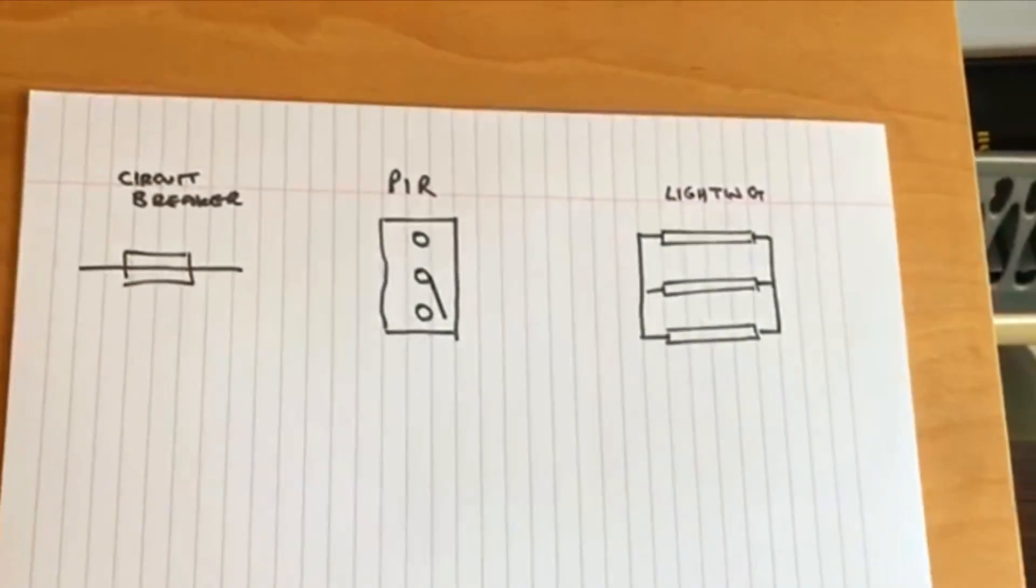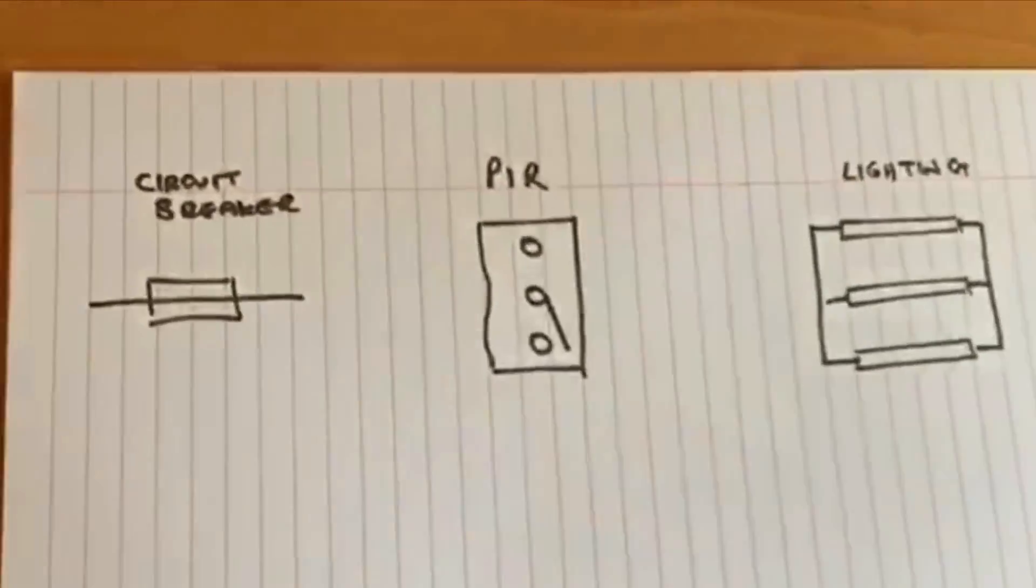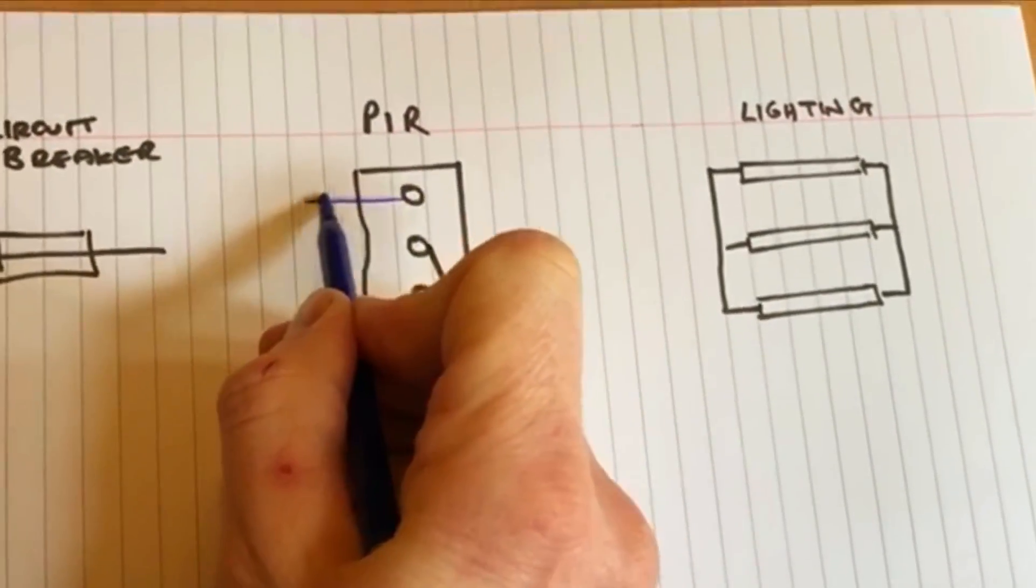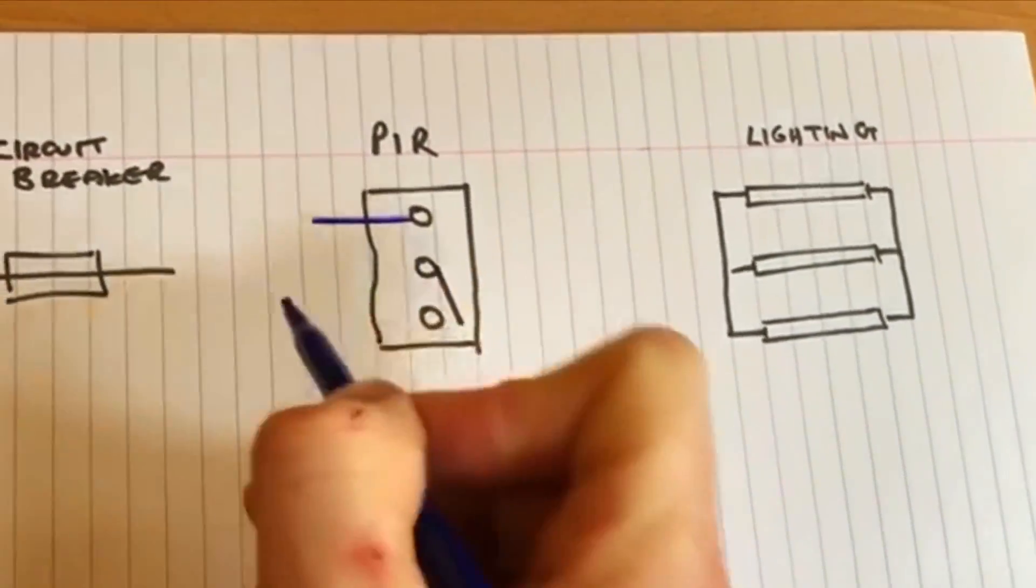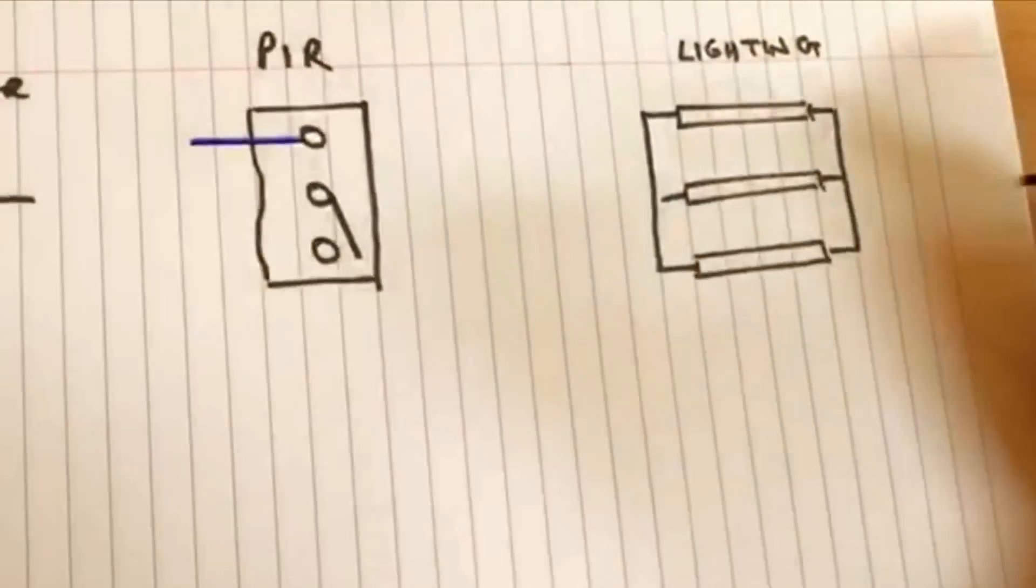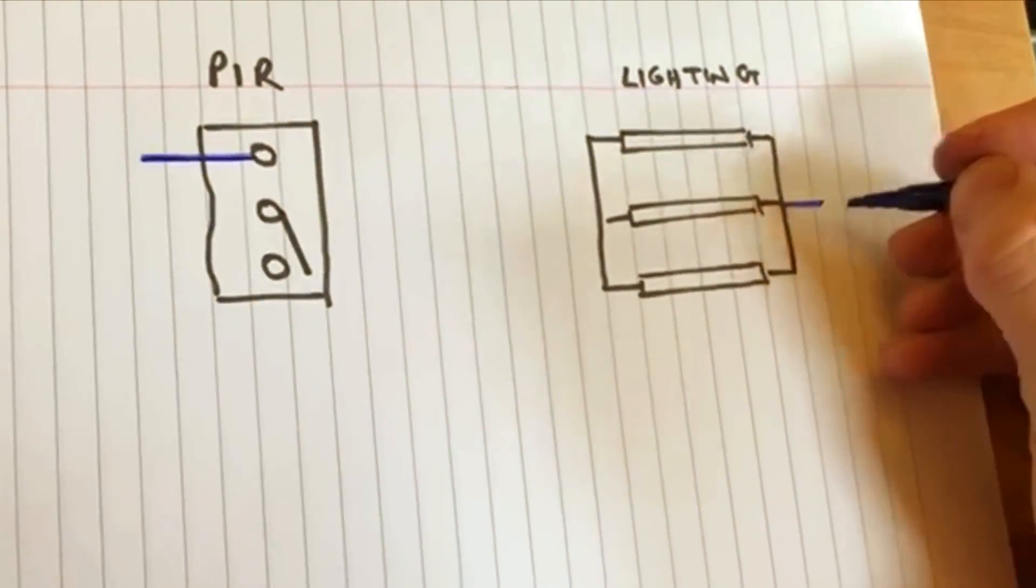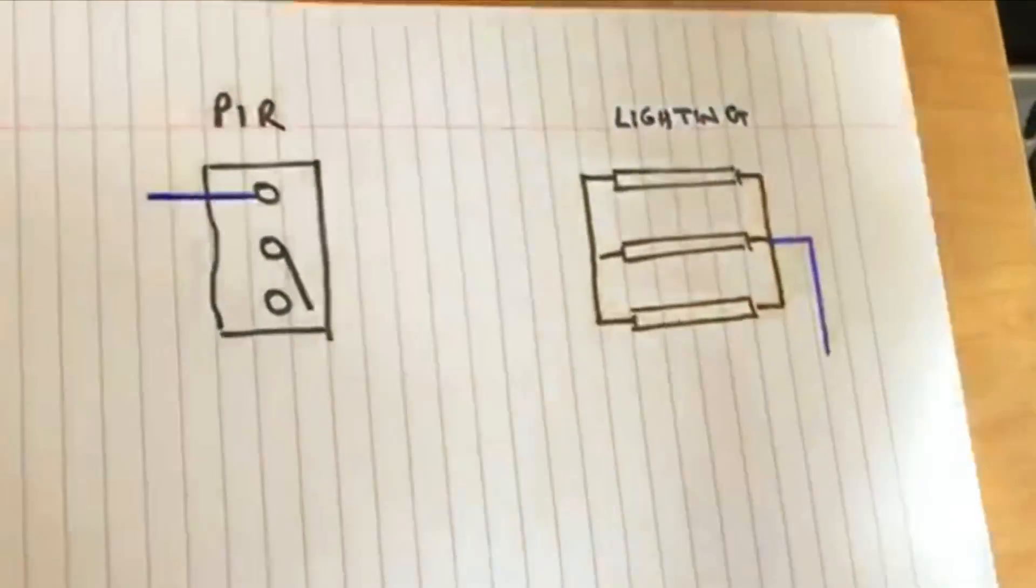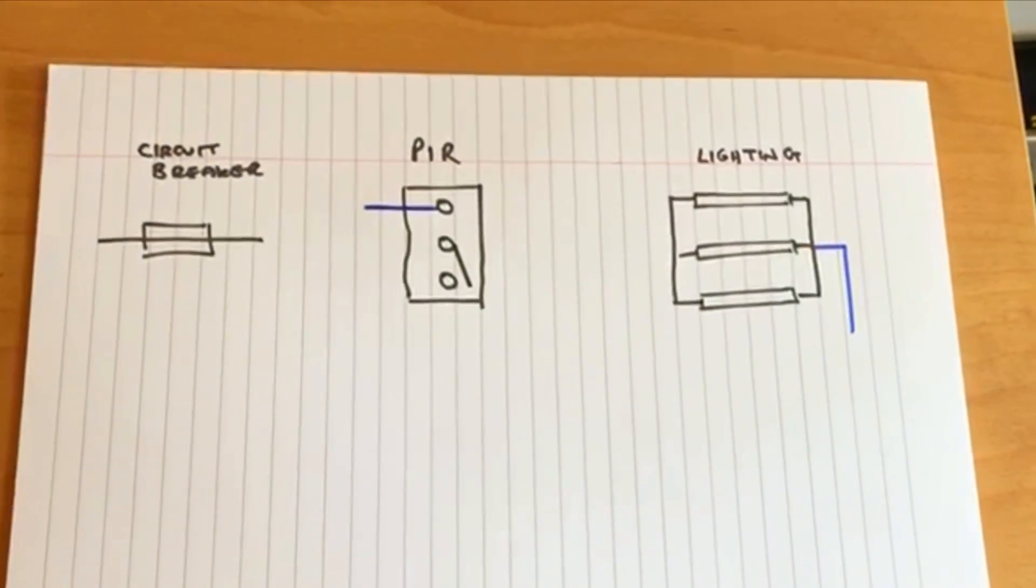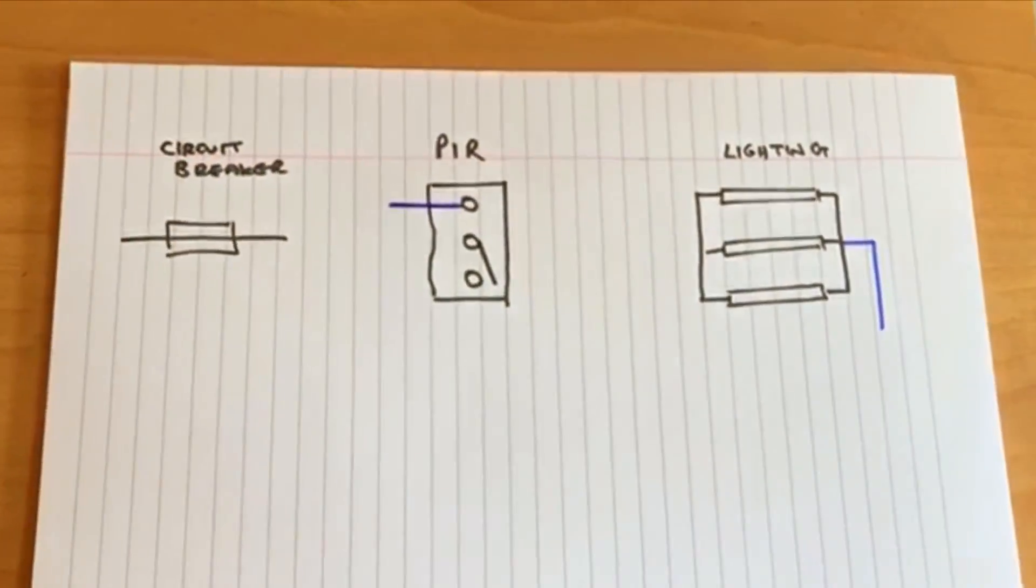So the first thing to think about is the neutrals. On this lighting circuit there's obviously going to be a neutral going to the PIR, so that's all I'm going to draw there. I'm not actually going to draw it in the circuit. Also on the actual lights there will be a neutral going to there. There will also be a CPC but I'm not going to draw those in this one.